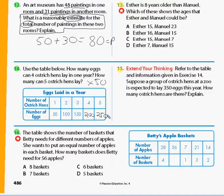Problem number 16: The table shows the number of baskets that Betty needs for different numbers of apples. She wants to put an equal number of apples in each basket. How many baskets does Betty need for 56 apples? So we'll go ahead and look at this. For 28 apples, she needs four baskets. 56, we're trying to figure out that one. For seven apples, she needs one basket. For 21 apples, she needs three baskets. And for 14 apples, she needs two baskets. So I'm pretty sure I know what the rule is because we can see right here on this one, she needs seven for one basket, seven apples, or she needs one basket for seven apples. So that's a divide by seven rule.